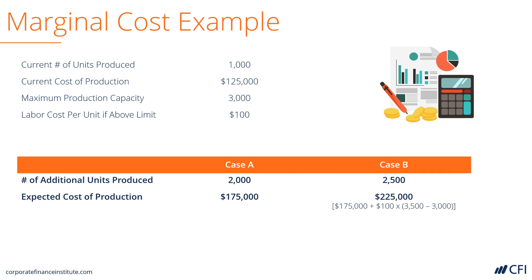In scenario A, the company is going to produce another 2,000 units. That keeps it just within the limit of the production capacity — it started off with 1,000 and produces 2,000 more. The expected cost of producing those additional 2,000 units is $175,000.